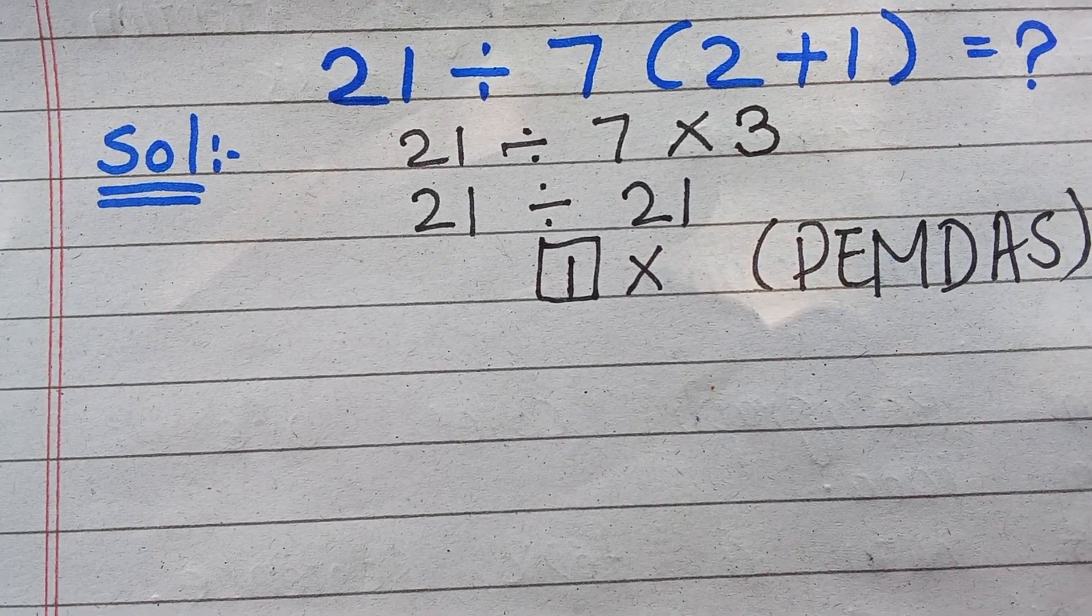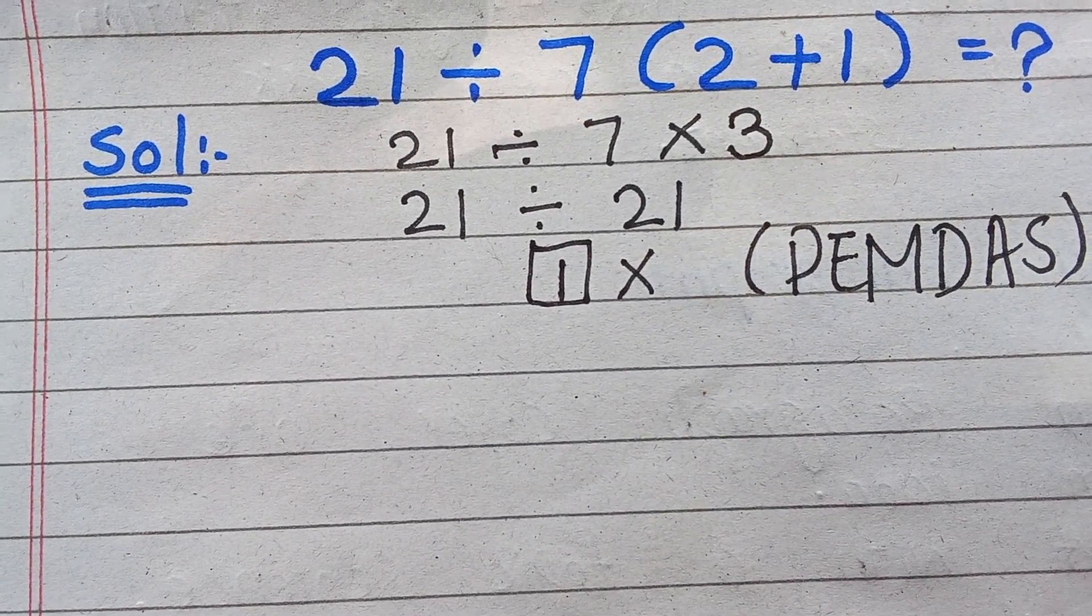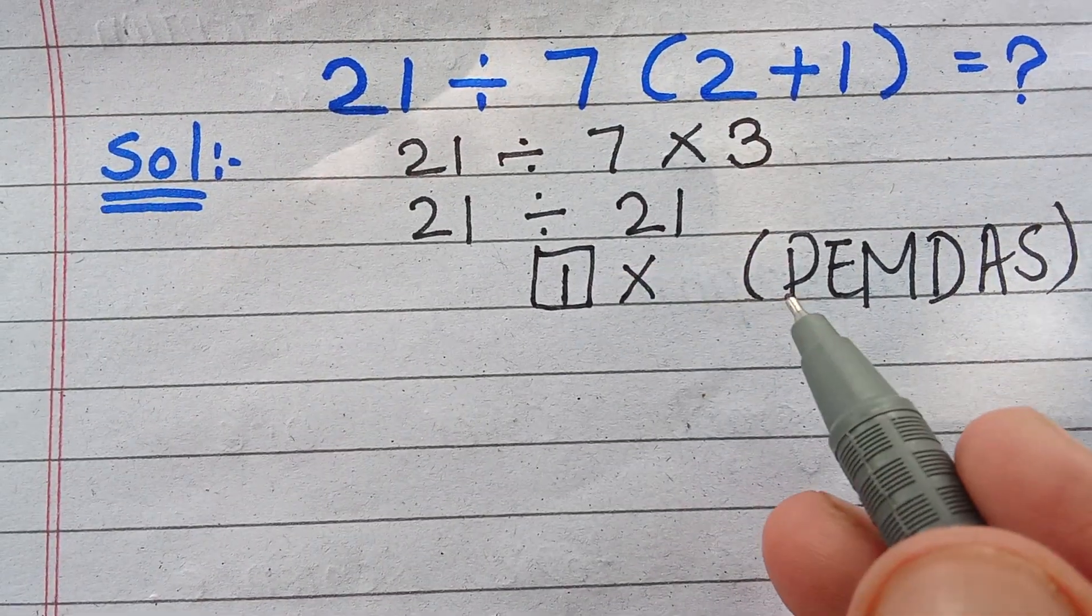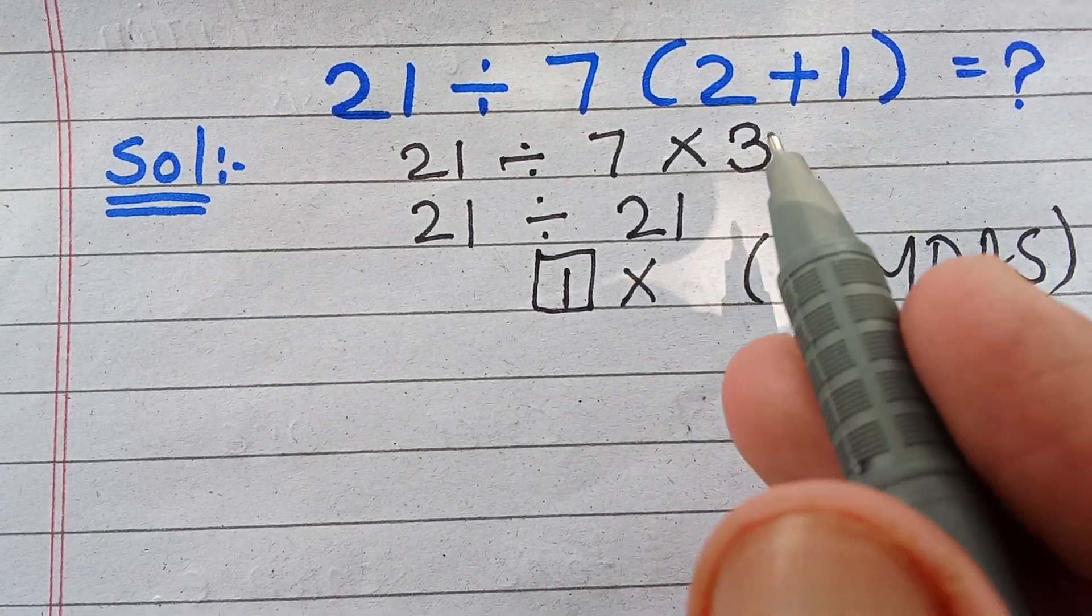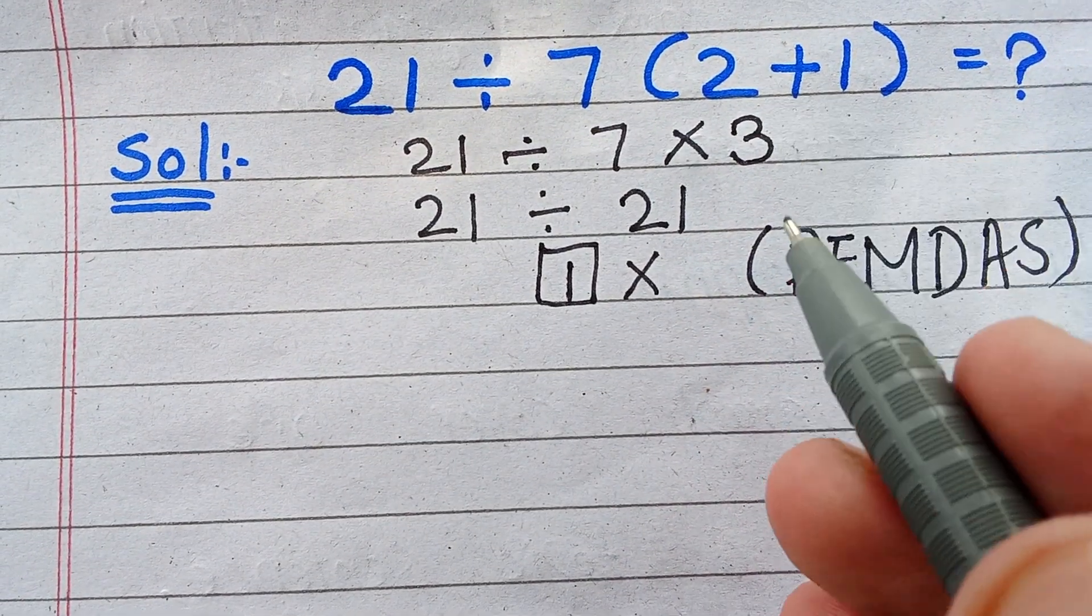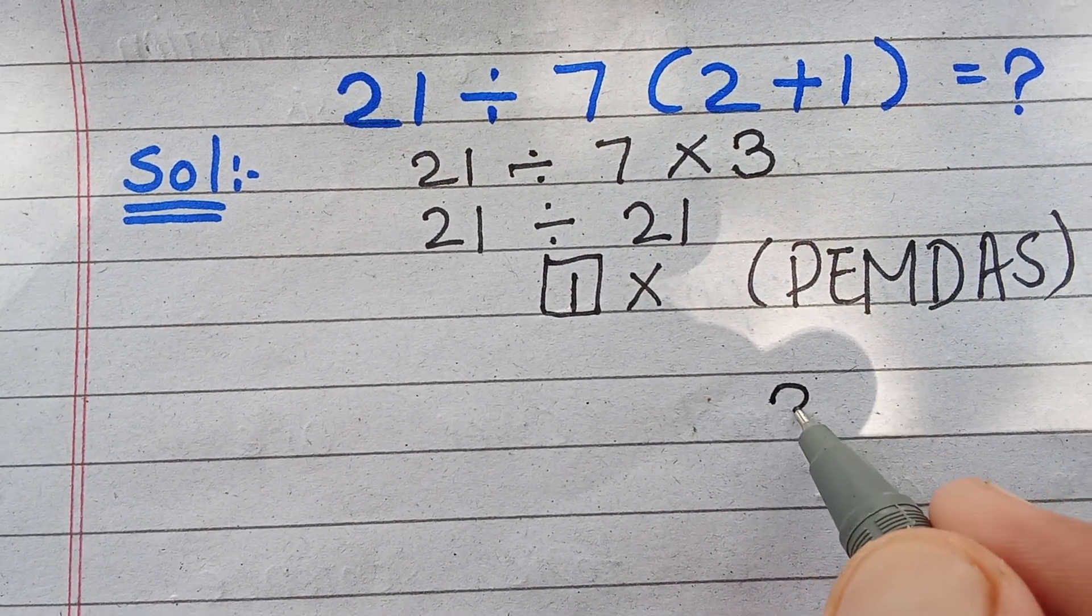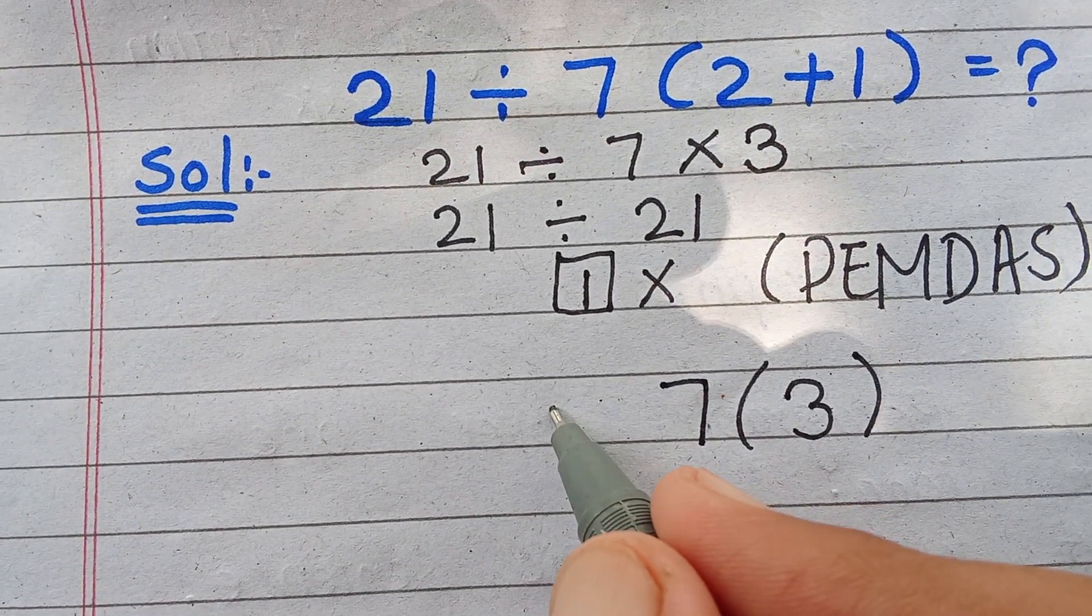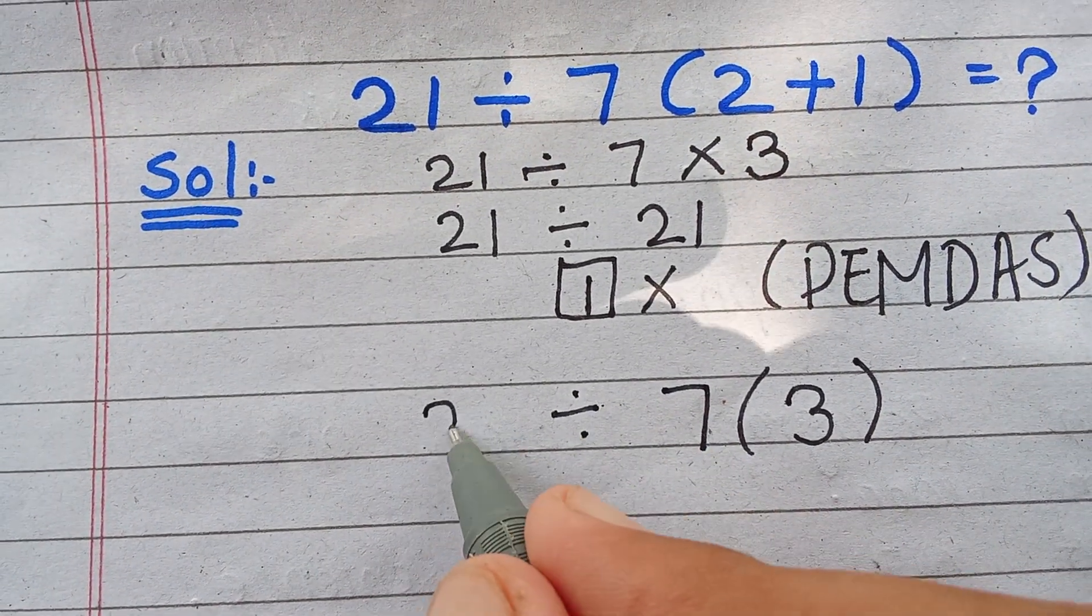We have to solve from left to right, and parenthesis have higher priority than other operations. So first we solve the parenthesis: 2+1 equals 3, giving us 7 times 3 divided by 21.